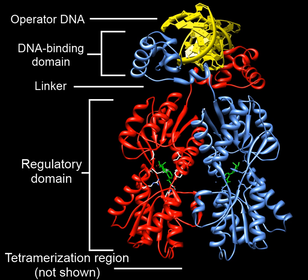Many transcription factors in multicellular organisms are involved in development. Responding to stimuli, these transcription factors turn on or off the transcription of the appropriate genes, which, in turn, allows for changes in cell morphology or activities needed for cell fate determination and cellular differentiation. The Hox transcription factor family, for example, is important for proper body pattern formation in organisms as diverse as fruit flies to humans. Another example is the transcription factor encoded by the sex-determining region Y gene, which plays a major role in determining sex in humans.